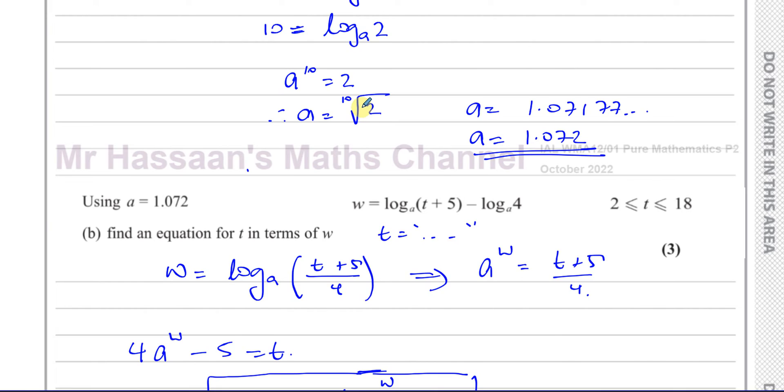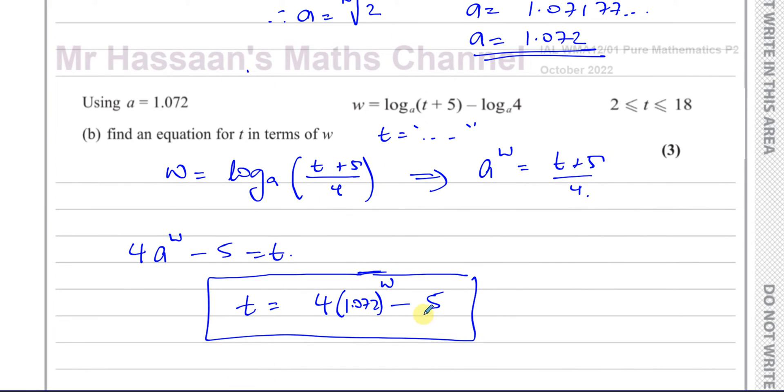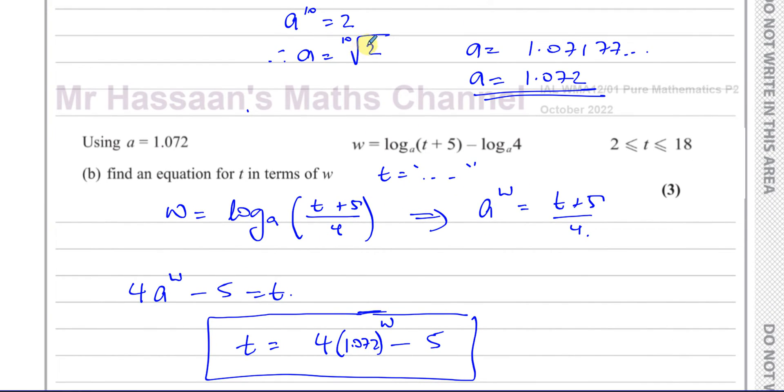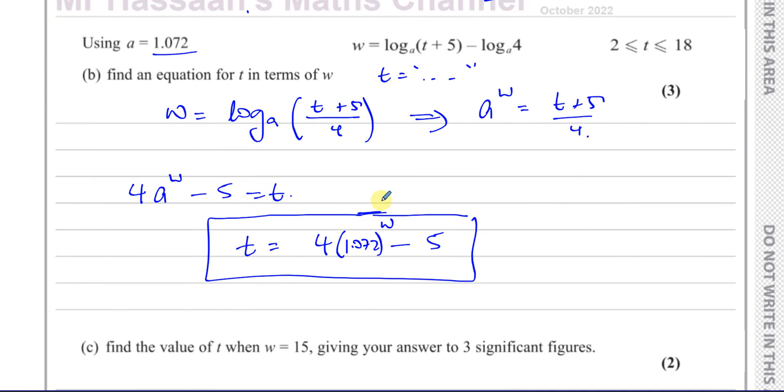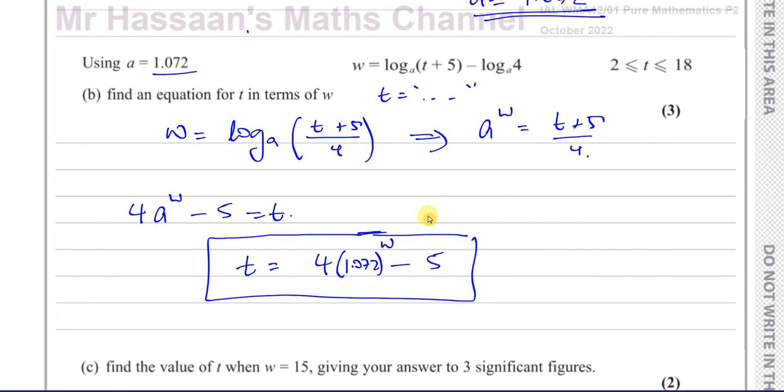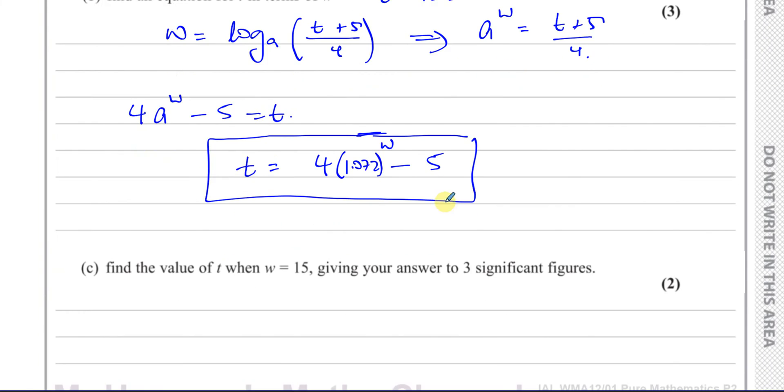You have to put 1.072. And we don't write down the exact value. Some people might write t equals 4 times the 10th root of 2 to the power of w minus 5. No. What they're telling us to use a equals 1.072. So using the exact value here is not going to get us the full marks. You will definitely lose marks if you don't follow their instruction. If it just said find an equation for t in terms of w, then you could use the exact value. But here they've told you what to use. So you must use that. And that's also mentioned in the examiner's report for this question.